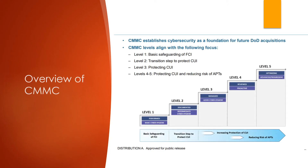Now let's take a high-level look at the CMMC model. The model is meant to measure cybersecurity maturity with five different levels. Each of these maturity levels is made up of processes and practices. The processes range from performed at level one to optimizing at level five, and the practices range from basic cyber hygiene at level one to advanced and progressive at level five. The maturity levels associated with the practices and processes from each level are cumulative, meaning that at CMMC level three, all practices and processes from levels one, two, and three must be performed to be compliant and earn that certification.